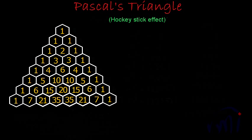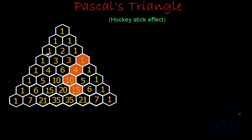Let me color one hockey stick in this Pascal's Triangle. If I color this 1, this 4, this 10, and this 15 — this forms a hockey stick. This is the long stick of the hockey and this is the bend. This is in the shape of a hockey stick. Let me color this bend in green. This 15 is actually equal to the sum of all the numbers on the long stick: 1 plus 4 is 5, 5 plus 10 is 15, and 15 is written over here.